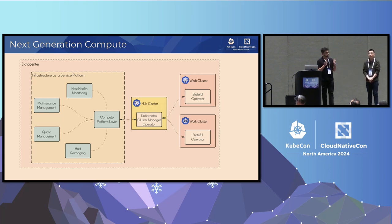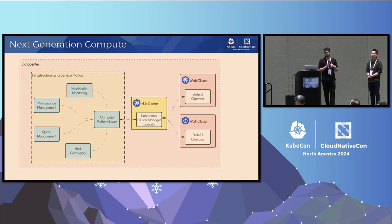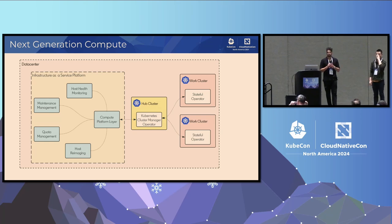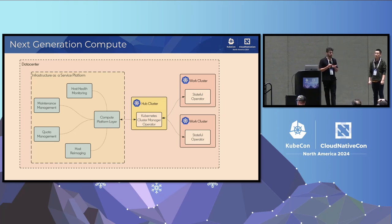On one side we have the infrastructure-as-a-service platform, which is completely decoupled from Kubernetes — not Kubernetes-aware. It sits on top of the data center with high-level components: maintenance management, host health management, quota management. On top of that, we layer Kubernetes. We have a hub-and-spoke model where a hub cluster manages all the work clusters. The way we scale Kubernetes at LinkedIn is by scaling out our work clusters, and the hub cluster helps us manage that.